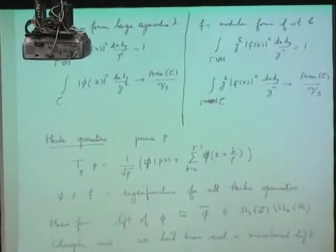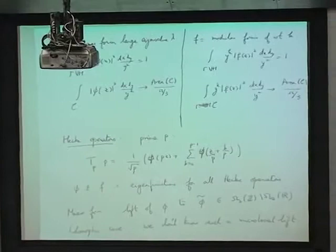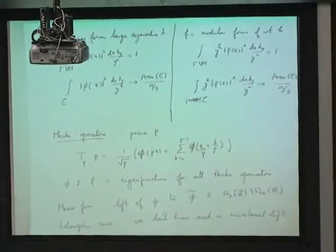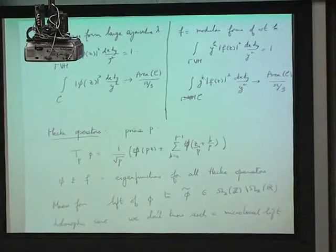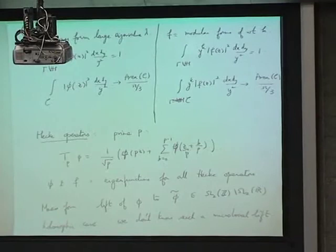Let's think about the Hecke operator T_P — you can see it's a sum of p+1 terms. You can think of it as a random walk: you start at your point z, then either go to p times z, or to one of the points z over p, z plus 1 over p, etc. You're averaging over p+1 points, and the normalization by 1 over square root of p suggests a lot of cancellation — this walk mixes very quickly.